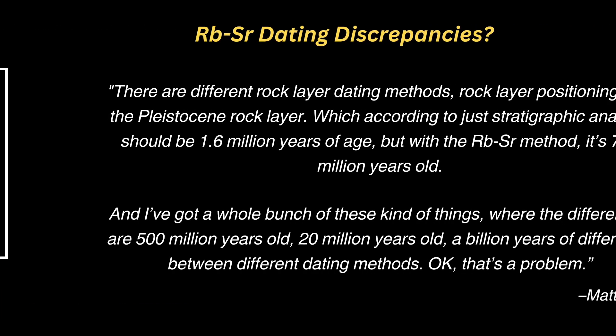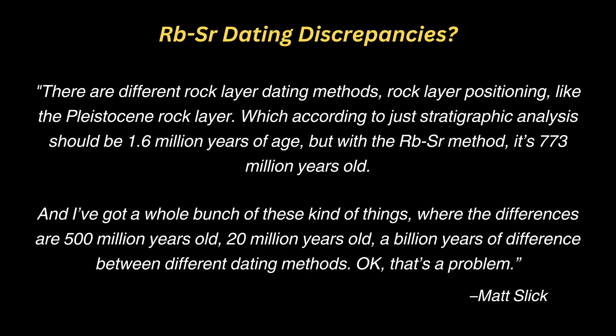Let's take a look now at Matt's claim. He states there are different rock layer dating methods — rock layer positioning, like the Pleistocene rock layer, which according to just stratigraphic analysis should be 1.6 million years of age, but with the rubidium-strontium method it's 773 million years. What he means is that we have recent volcanics from the Cenozoic, which give a rubidium-strontium isochron age of 773 million years. That's an error of at least 700 million years — so what's the deal?